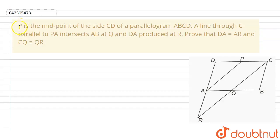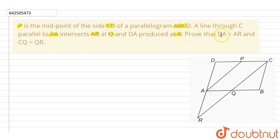In this question, it is given that P is the midpoint of side CD of a parallelogram ABCD, and a line through C parallel to PA intersects AB at Q and DA is produced to R. We have to prove that DA is equal to AR and CQ is equal to QR.